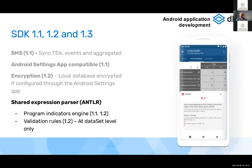We have a shared expression parser — ANTLR grammar — shared between Android and the DHIS2 core. This means all expressions with program indicators will produce the same results. Since versions 1.1 and 1.2, we support most program indicator variables and DHIS2 functions. Any complex expression defined in a program indicator can be handled by the SDK.